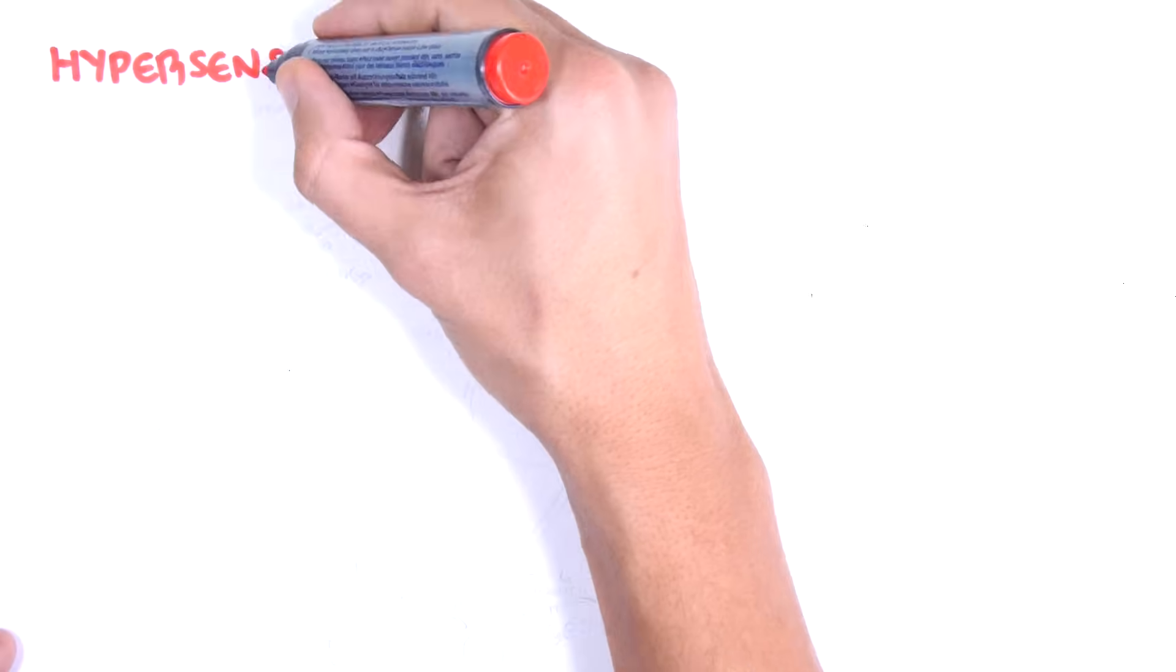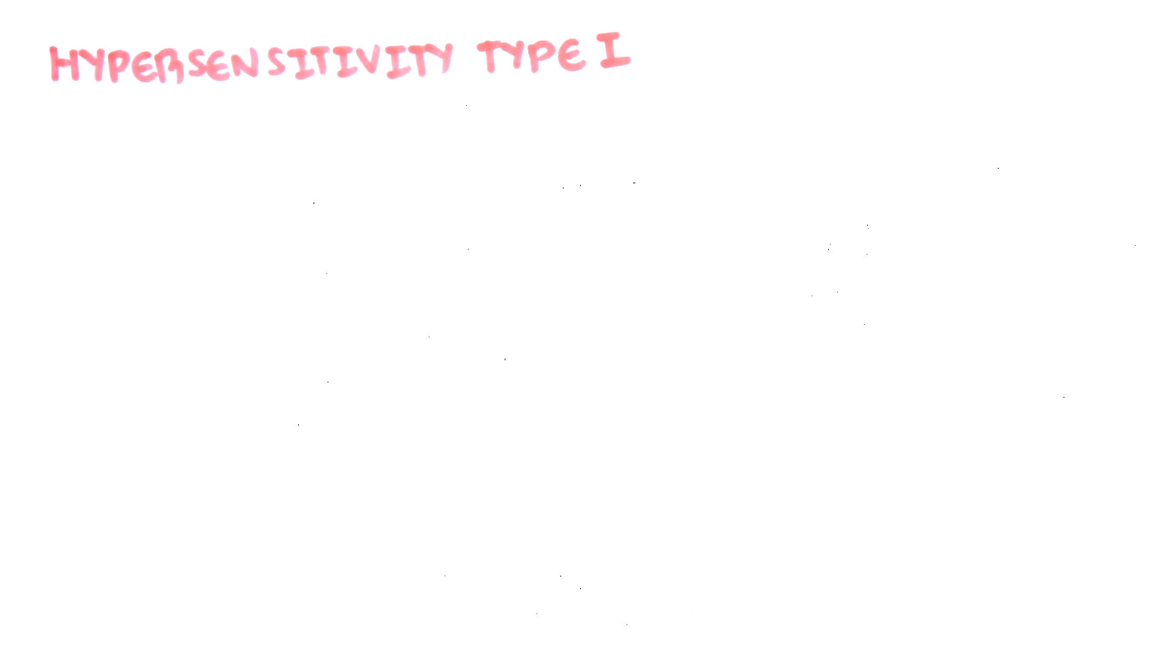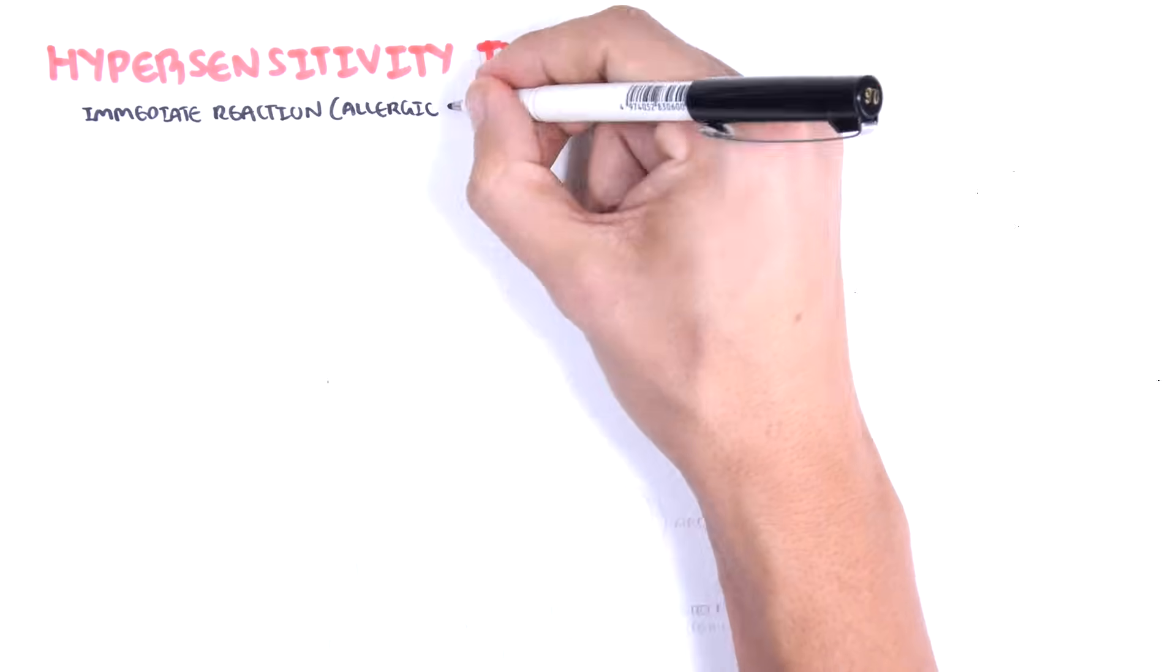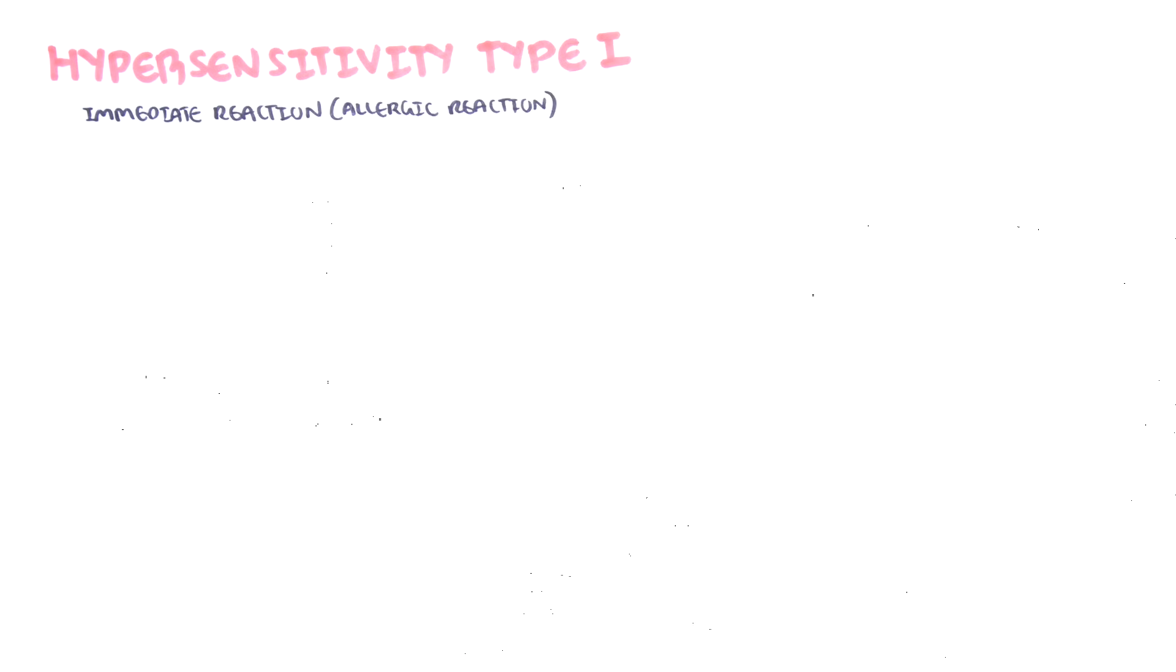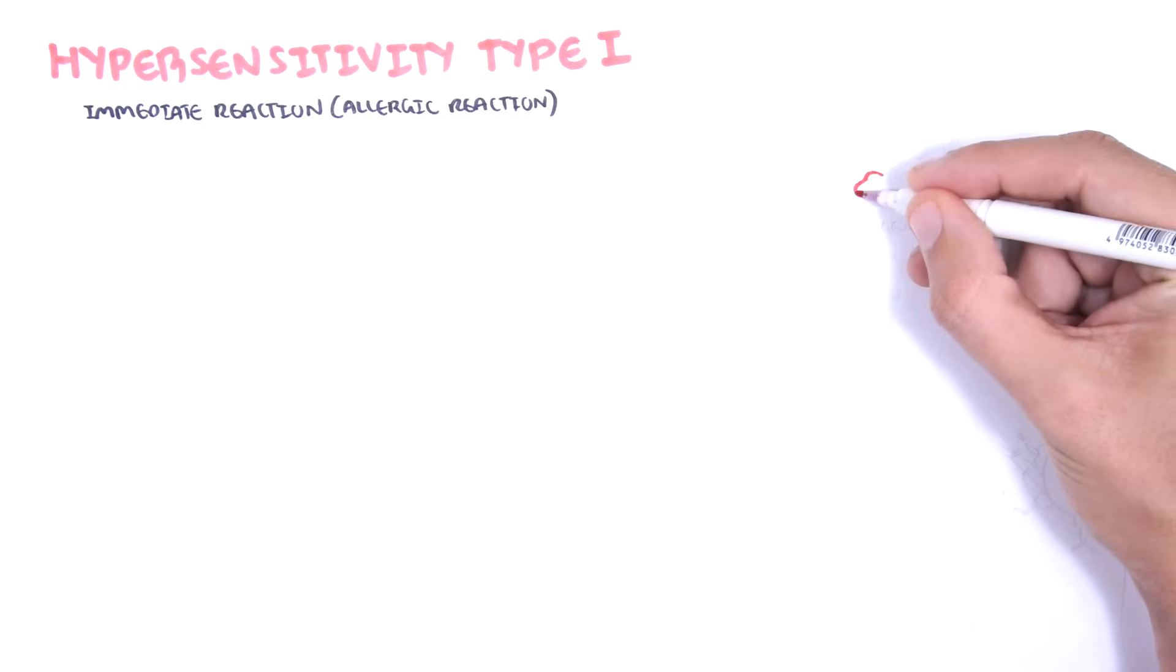Hypersensitivity type 1 is an antibody-mediated reaction. It is also called the immediate hypersensitivity reaction because it is fast. An allergic reaction is a type 1 hypersensitivity reaction, and really involves recognition of an antigen by primed IgE immunoglobulins on mast cells.